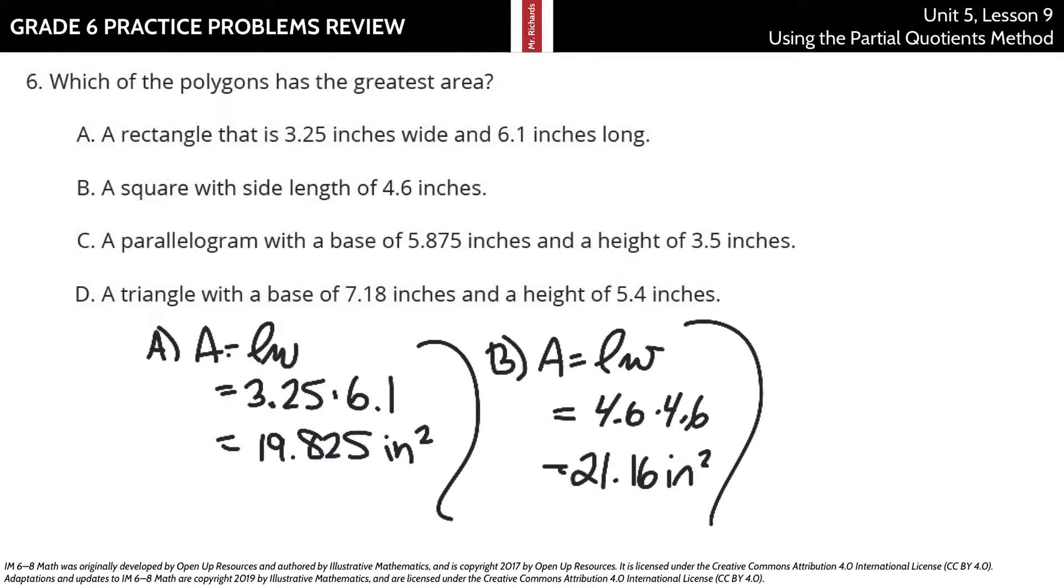In C, parallelogram. Well, area equals base times height for parallelograms. So, we're looking at 5 and 875 thousandths multiplied by 3 and 5 tenths. When you multiply those two numbers together, you get 20 and 5625 ten thousandths square inches.